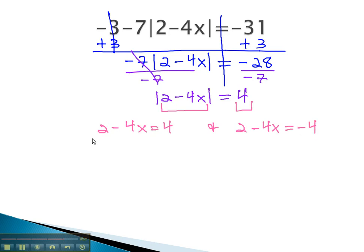We can quickly solve these two-step equations by first subtracting 2 from both sides, giving us negative 4x equals 2, and finally dividing both sides by negative 4. This gives us x equals, after reducing, negative 1 half.